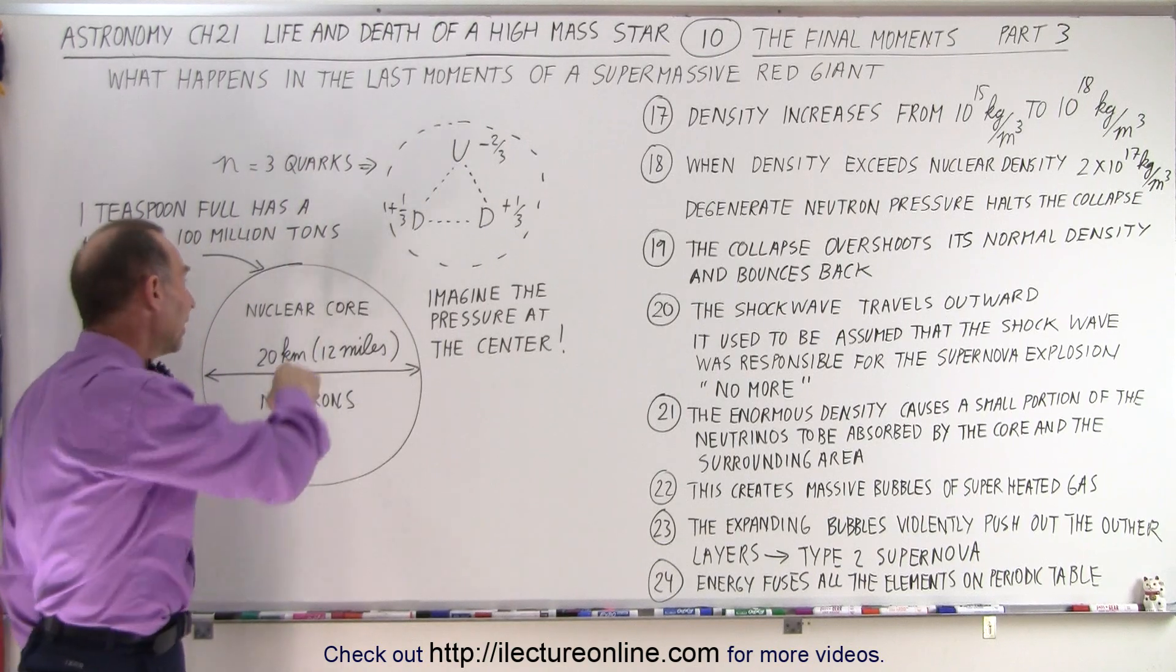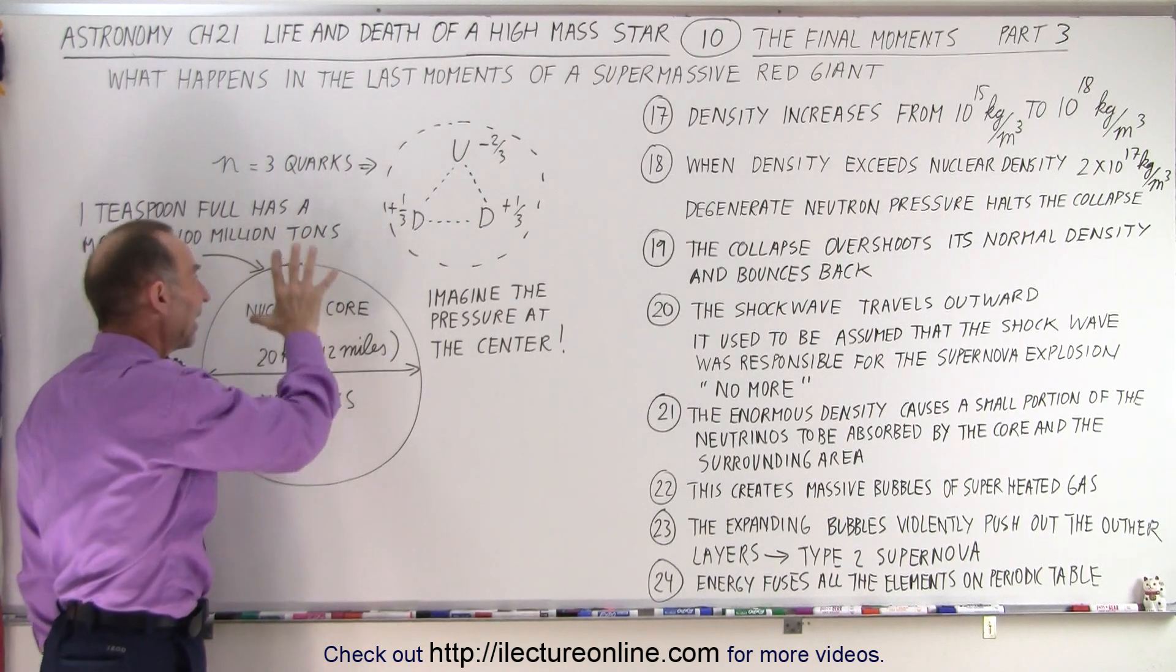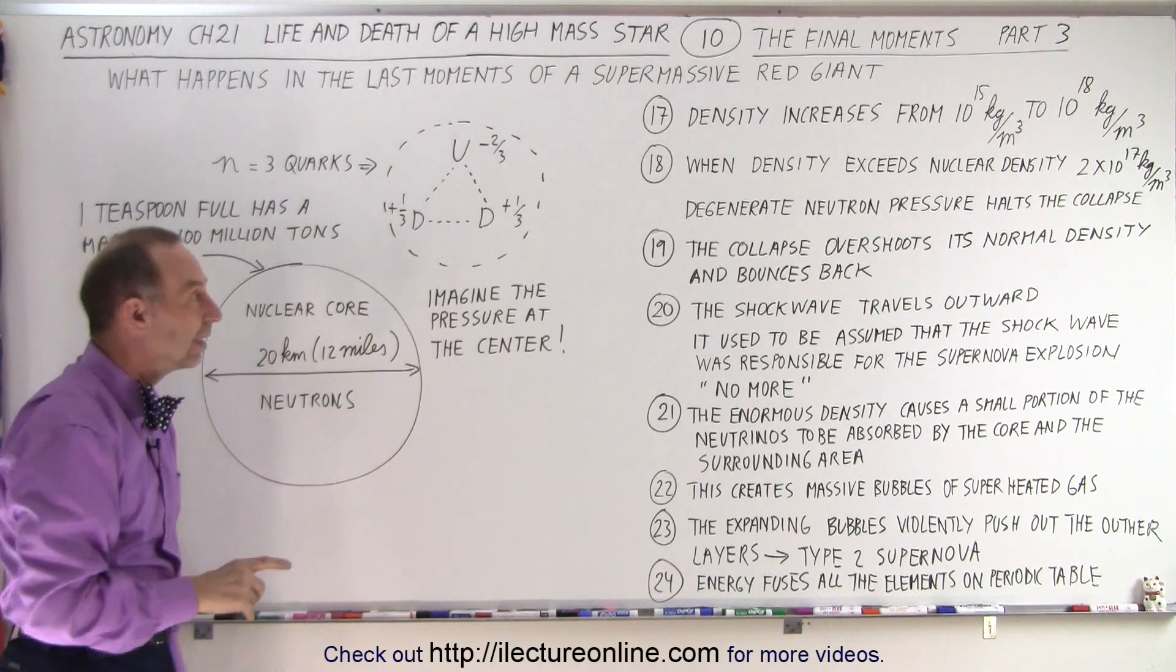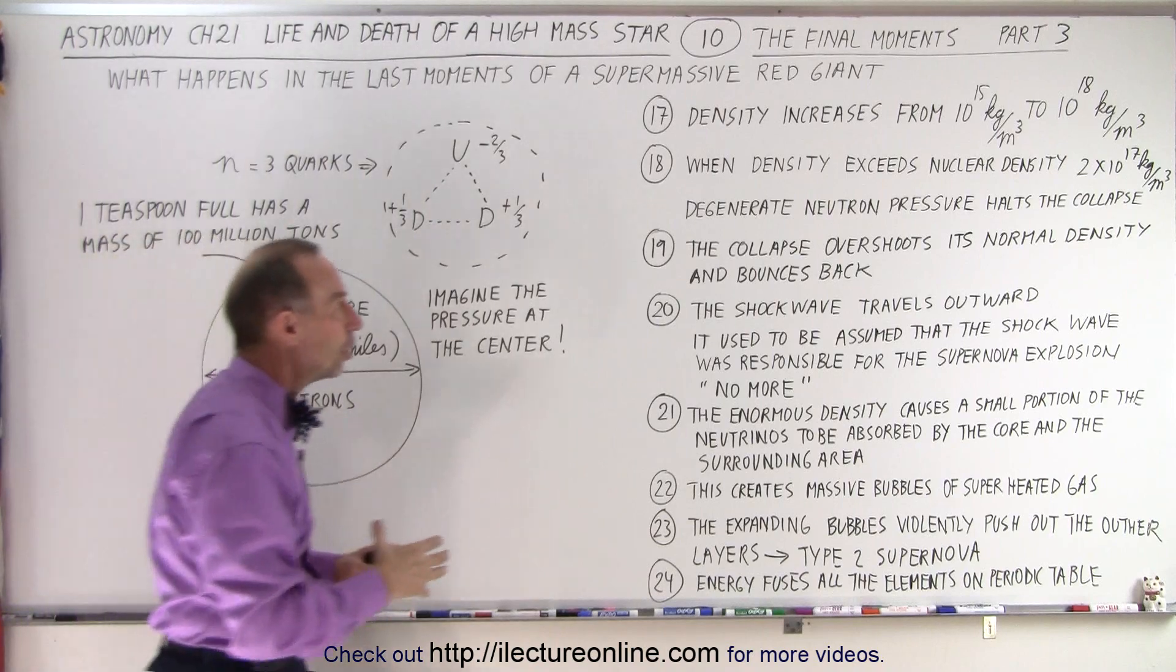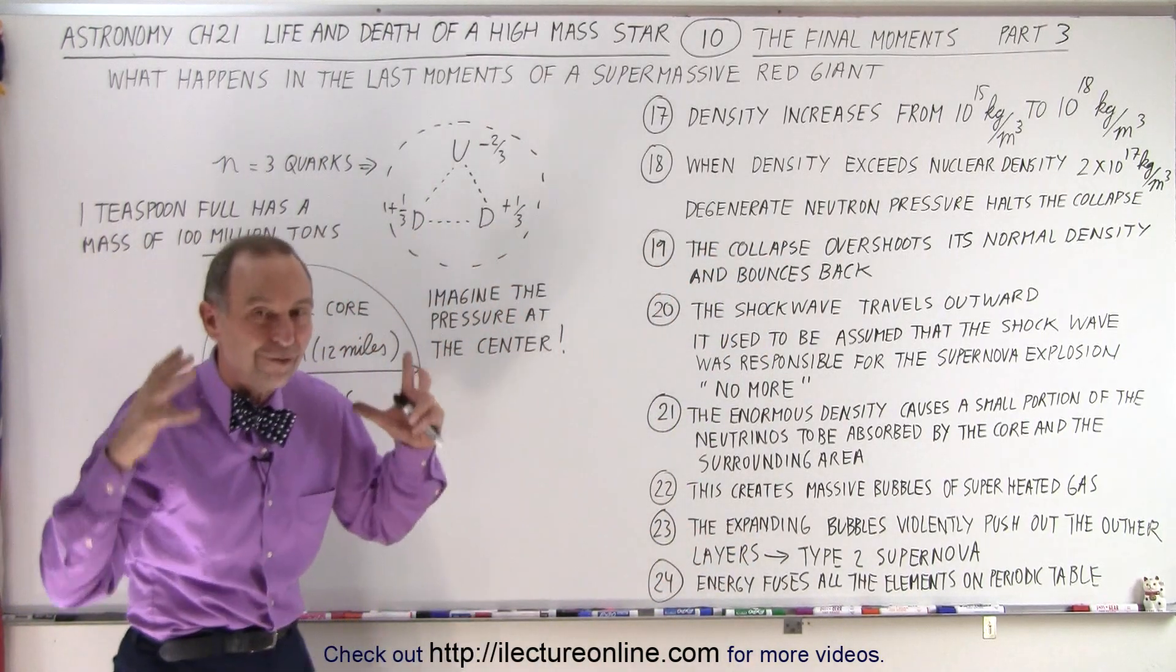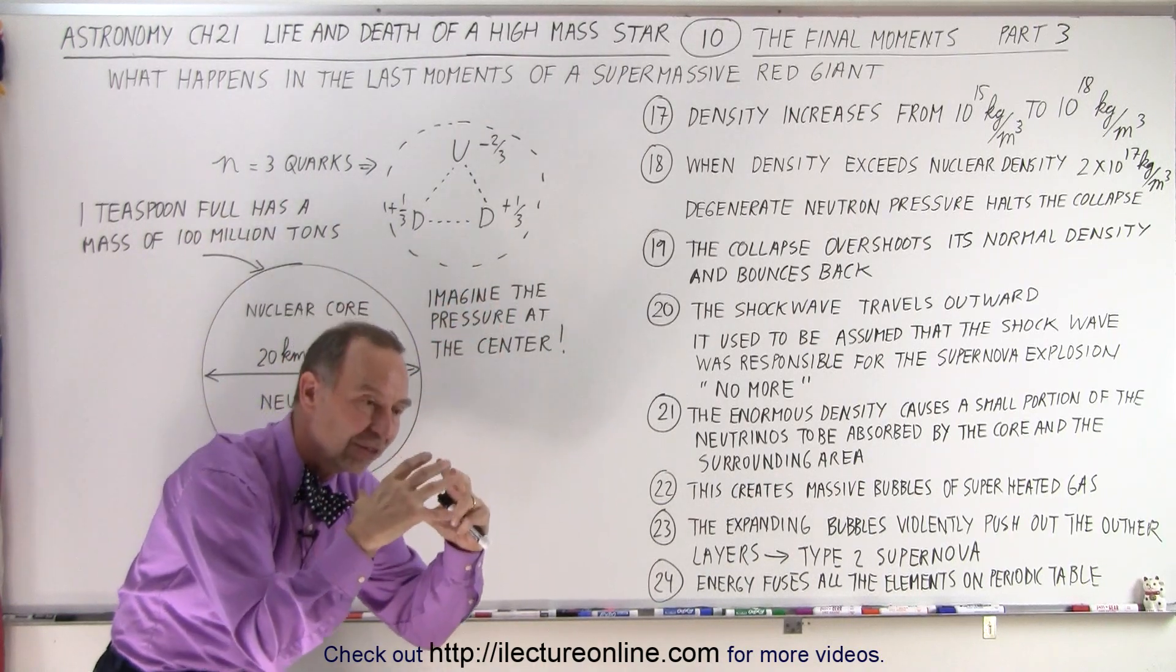And at the very center of that, we have these arrangements of neutrons that are held together by three quarks, one up, two down quarks. And imagine the pressure at the center trying to push those quarks together. And somehow they're not capable of doing that. It's unbelievable that six miles down, 10 kilometers down in a nuclear ball that has that incredible density, the quarks can withstand that enormous pressure.